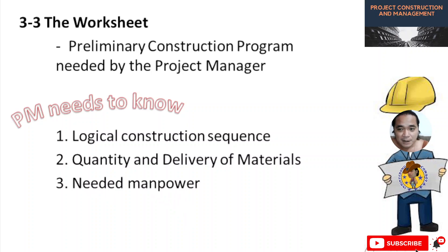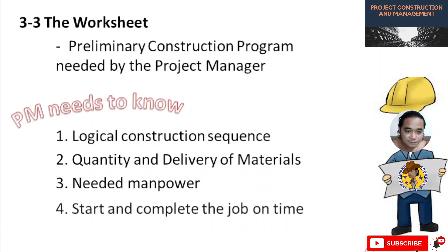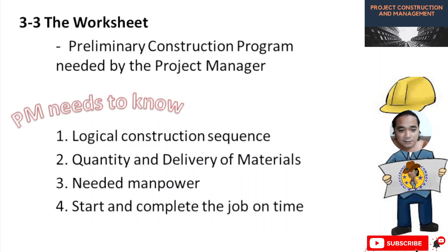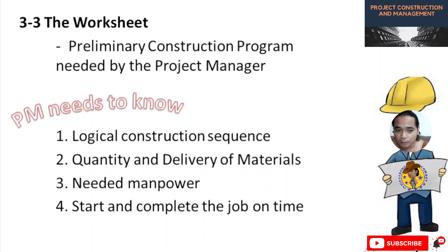Number three is the needed manpower — who will do the work and how many workers are needed. Number four is the start and completion date — you need to know the start date and also the completion of the job on time. There are also things a project will encounter as problems, especially if weather is involved, and you have to document those, as they may affect your target completion date.